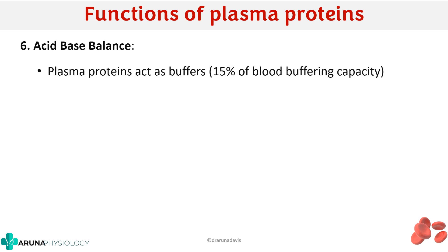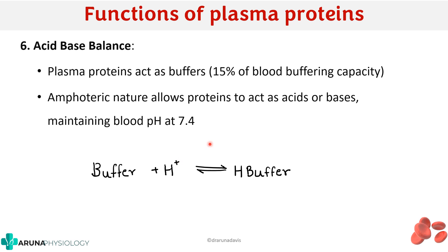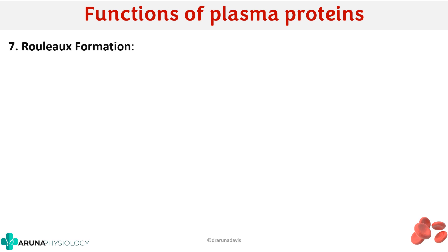Plasma proteins also contribute to acid-base balance by acting as buffers. A buffer is any substance that combines with a free acid or free base to maintain pH at a normal level. Plasma proteins have 15% of the blood buffering capacity. They are amphoteric in nature — they can act as acids or bases — and thereby help maintain blood pH at 7.4. If there are excess H+ ions in the blood, the plasma protein buffer combines with them, forming weak acids so the pH does not change much.